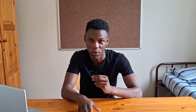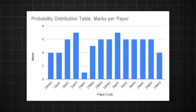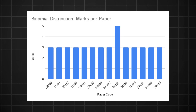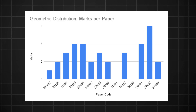Discrete random variables is one of the most essential topics in stats one and for good reason. It consists of three main questions that appear in almost every paper: the probability distribution table question, the binomial distribution question, and the geometric distribution question. The probability distribution table question has appeared in all 14 of the last 14 papers. Similarly, the binomial distribution question has also appeared in all 14 of the last 14 papers. And the geometric distribution question has appeared in 12 of the last 14 papers. Clearly, this is a very high-scoring topic, so make sure you give it the attention it deserves. There's a very good chance that all three questions come in the June exam session.